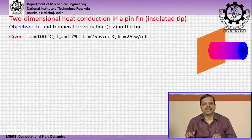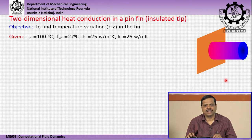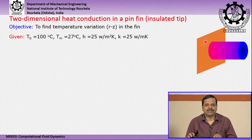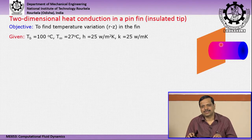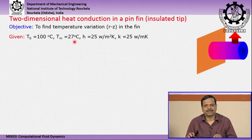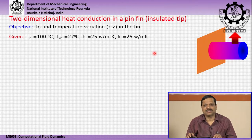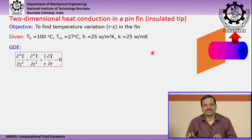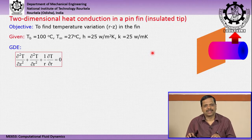Next we consider two-dimensional heat conduction in an insulated-tip pin fin — a circular fin attached to a surface at higher temperature. Our objective is to find the temperature variation along both the radial and axial directions of the fin, assuming temperature remains constant in the angular direction. The base temperature is constant at 100°C, with convective heat transfer from the outer surface given by a heat transfer coefficient h, ambient fluid temperature, fin conductivity k, and fin dimensions: length L and radius r_s. The governing differential equation is: ∂²T/∂r² + (1/r)∂T/∂r + ∂²T/∂z² = 0.